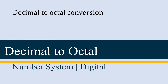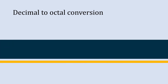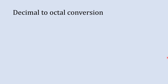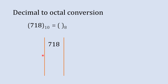Decimal to octal conversion is a really simple process, and in this video we are going to learn how to do that. First, we'll take the decimal number 718 and try to convert it into octal.